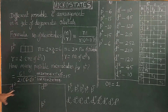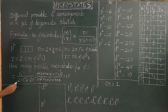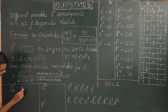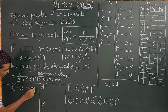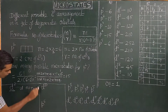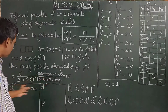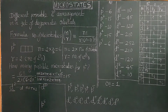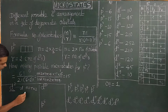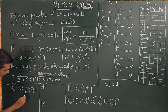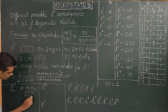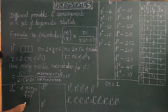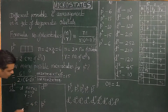Similarly, how many possible microstates are there for D2 electronic configuration? For D2: d orbitals = 5, so N = 2 × 5 = 10, and R = 2. Substituting into the formula, we get 45 microstates. There are 45 different possible electronic arrangements for D2 configuration.